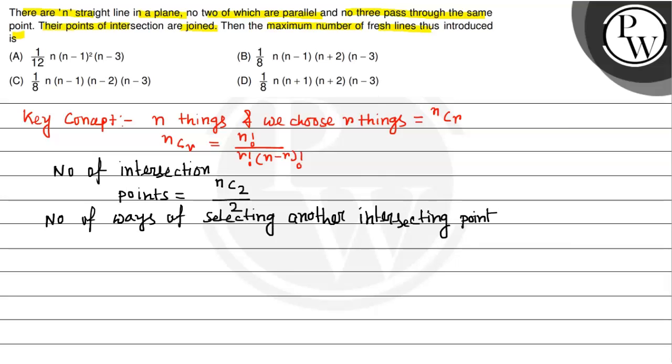Another intersecting point not lying in the respective two lines can be formed by counting the number of two lines that can be selected together from the remaining set.